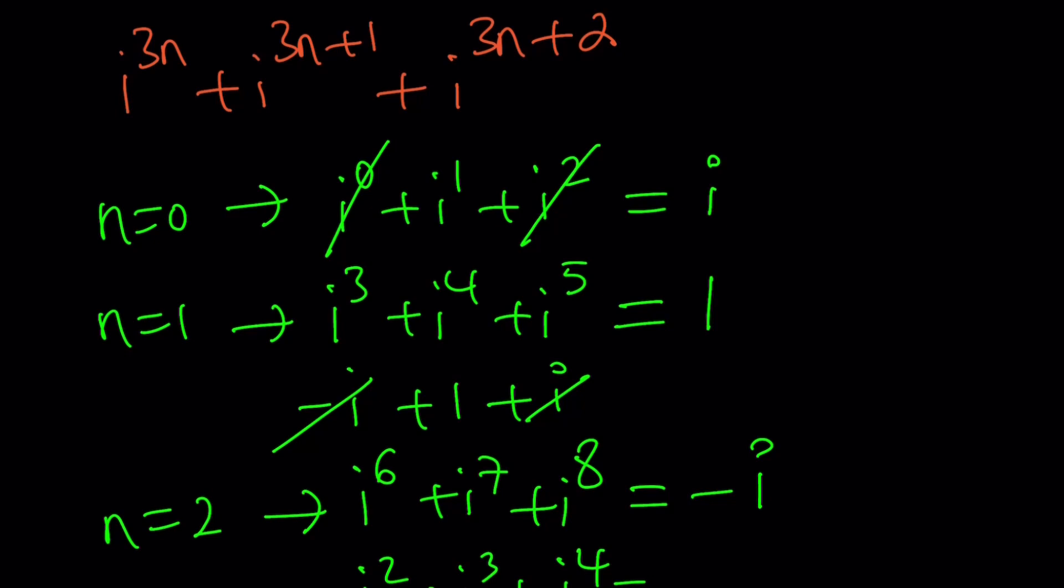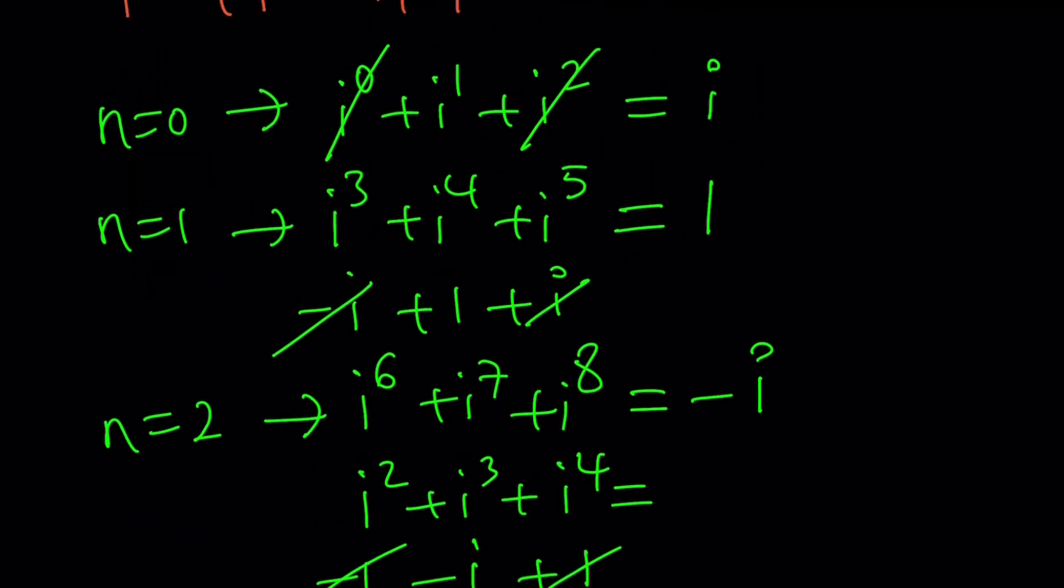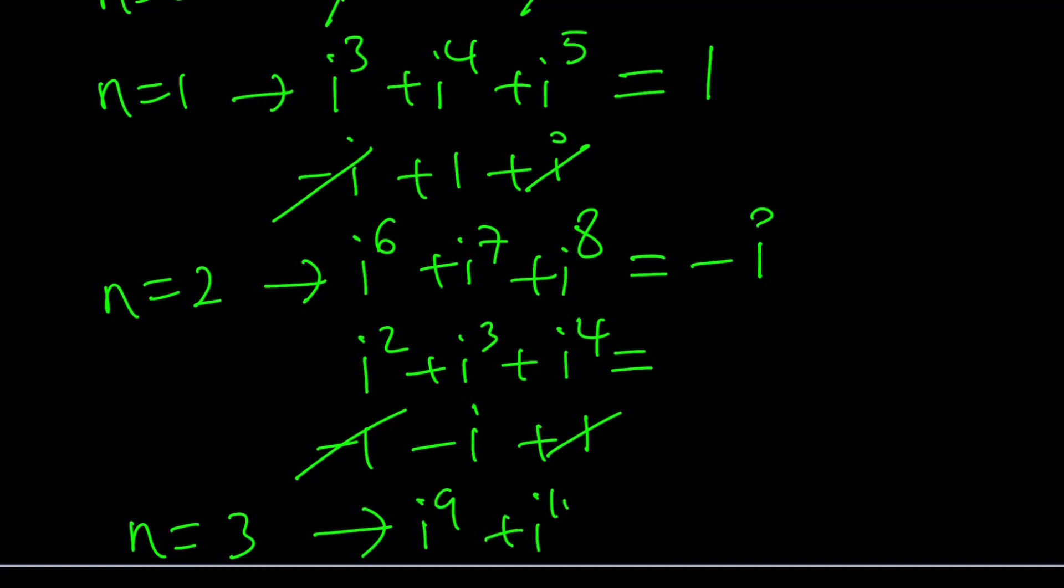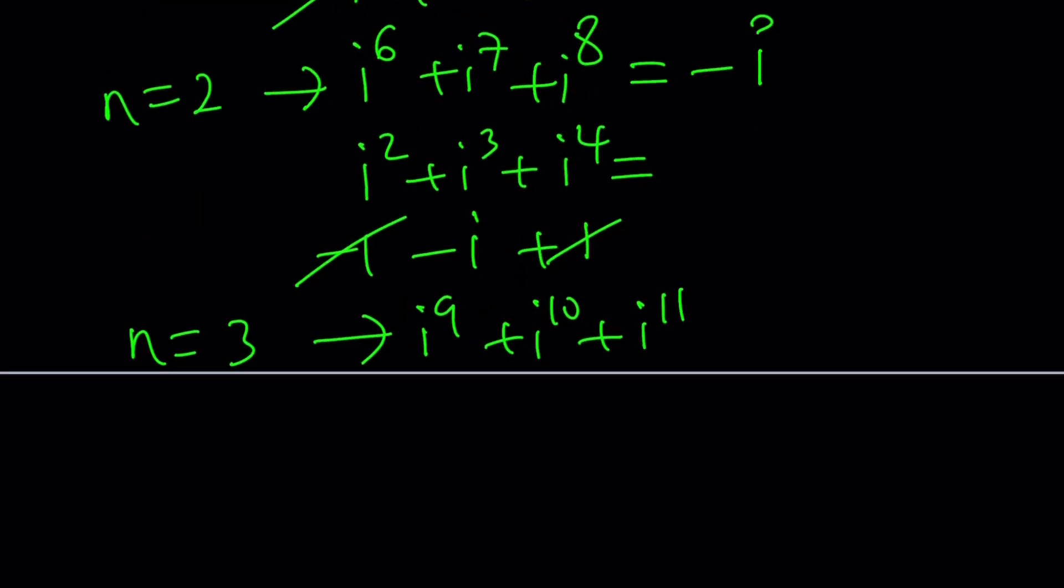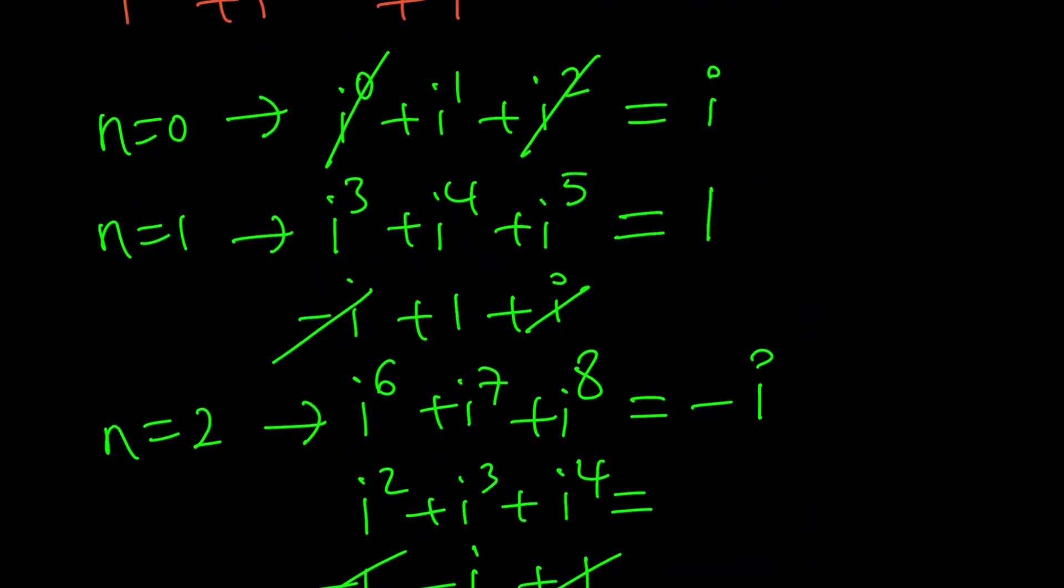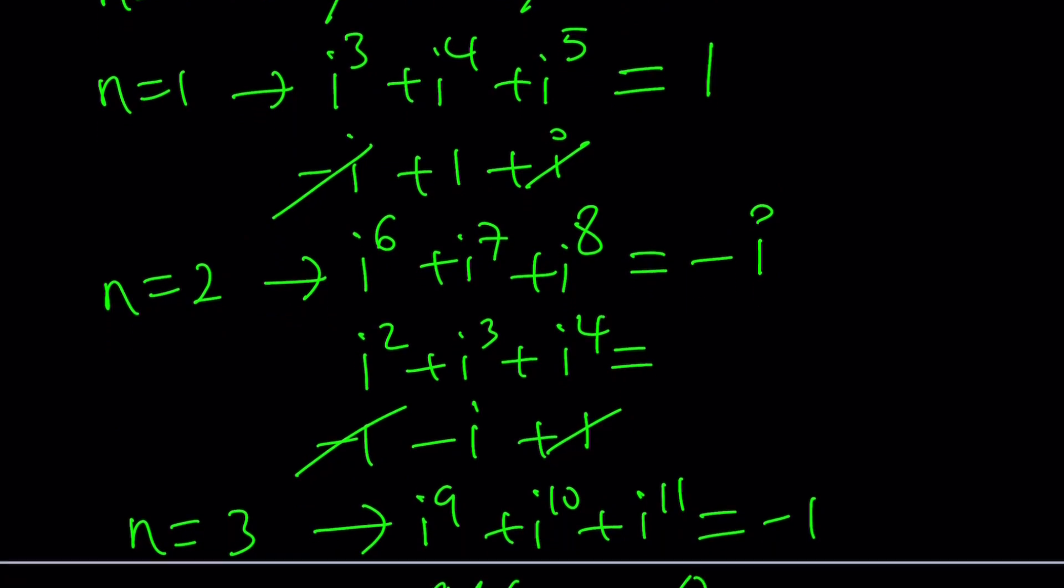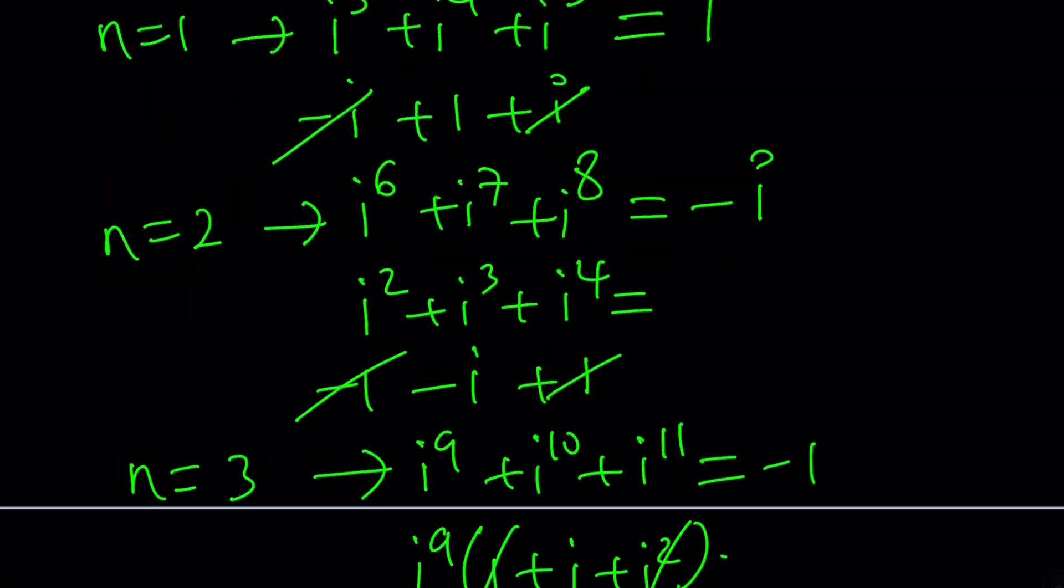This is going to be negative 1, negative i, and positive 1, and this time we're going to end up with negative i. It's pretty interesting. Every time we're getting a different answer, so there's no definite answer for this. Let's test N equals 3. So we're going to get i to the 9, i to the 10, i to the 11. By the way, one of the things you can do is you can pull out an i to the 9, and write this as 1 plus i plus i squared, and i squared and 1 is always going to cancel out. So basically it's i to the 10th, i to the 10th is i squared, so this is going to be negative 1. Looks like we cycle through all versions. i, 1, negative i, and negative 1. So what does that mean?